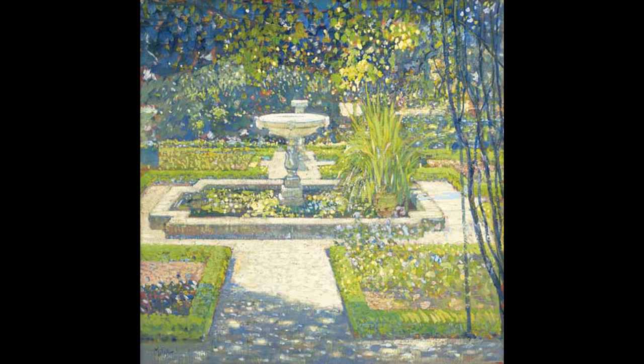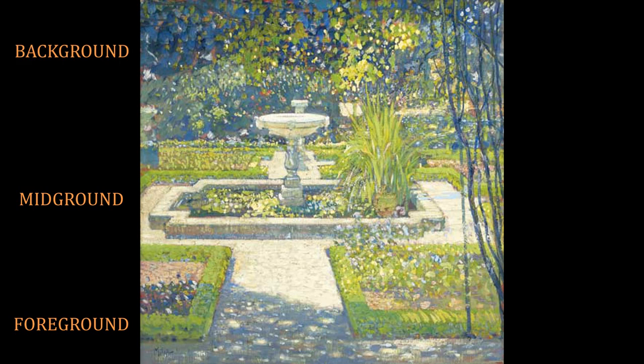All right, everyone, let's get started. So before we critique or judge the painting, we have to first analyze and understand what's going on in the painting — what do we see? We break it down into three different areas. First, the foreground, which is usually at the bottom of the painting, or something closest to you from your point of view. Second, the mid-ground, which is directly in the middle of the painting. And third, the background, usually at the top of the painting.